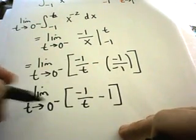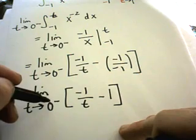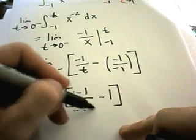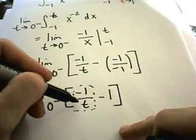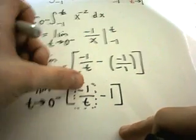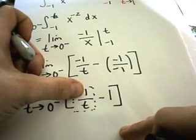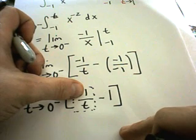But the problem in this case is if t approaches zero from the left, so in this part I'm plugging in very small negative numbers.